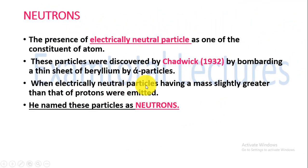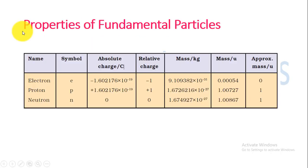These electrically neutral particles, whose mass is slightly greater than that of proton, were emitted out. Chadwick gave that particle the name neutrons. So these were all three particles. Now the properties of fundamental particles are as follows: electron...